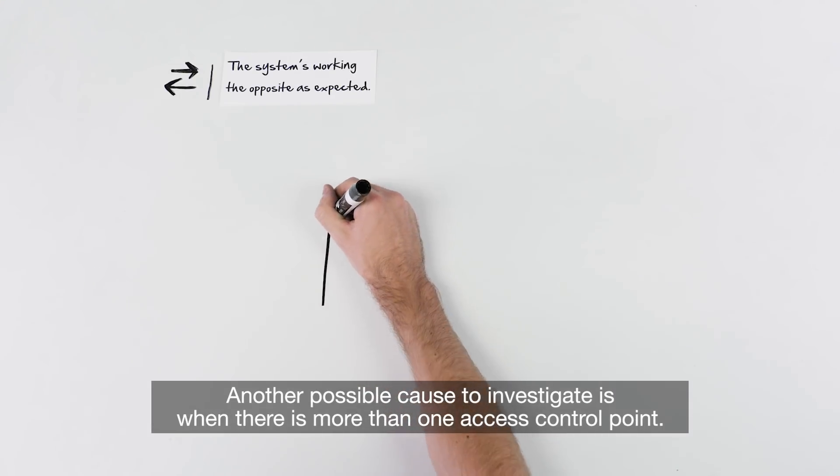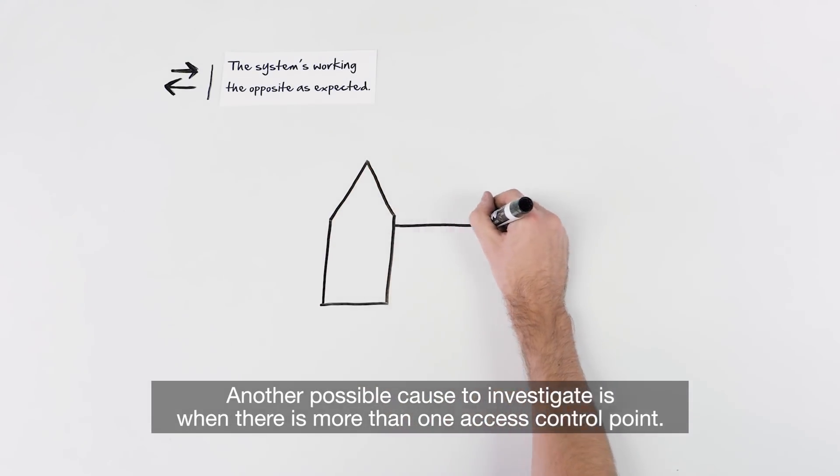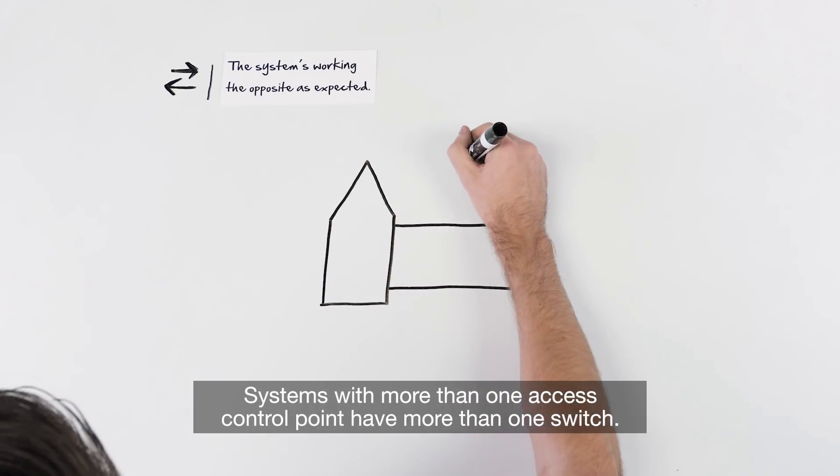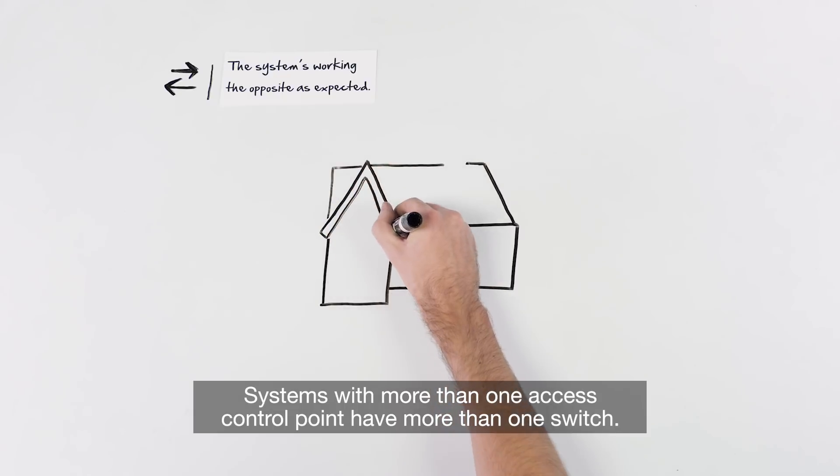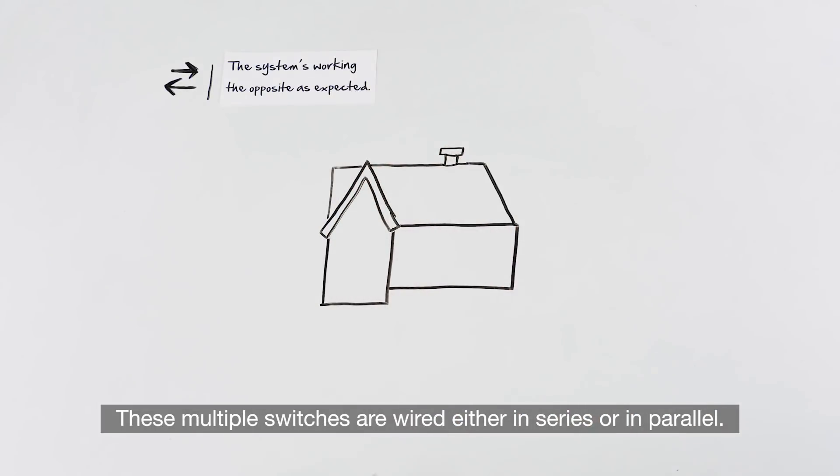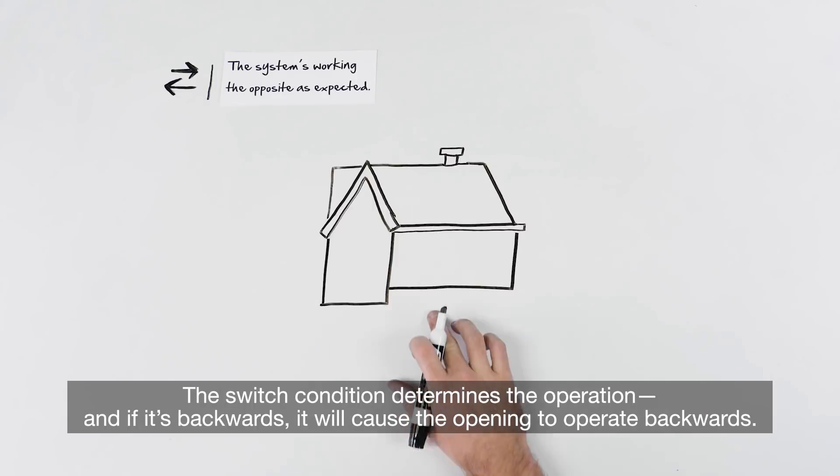Another possible cause to investigate is when there is more than one access control point. Systems with more than one access control point have more than one switch. These multiple switches are wired either in series or in parallel. The switch condition determines the operation, and if it's backwards, it will cause the opening to operate backwards.